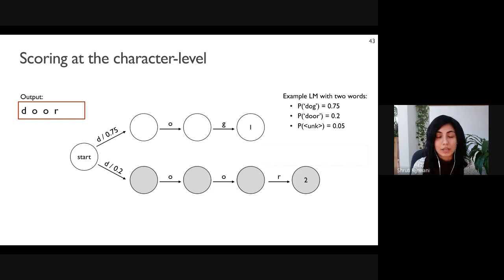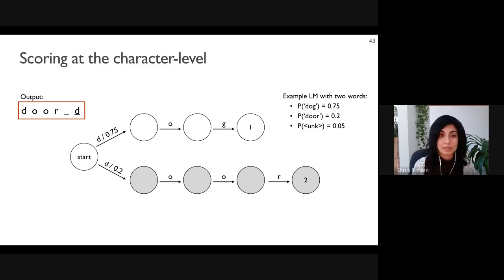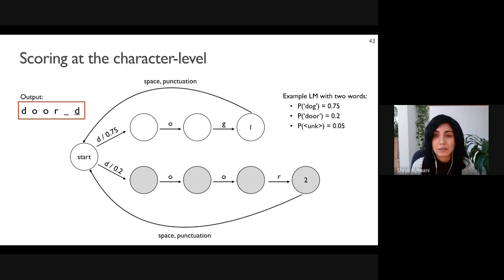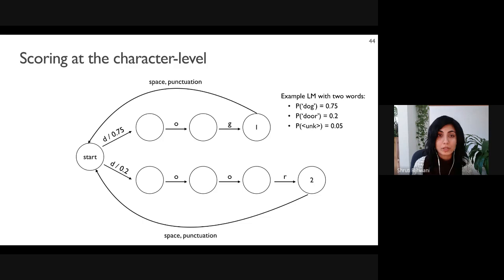We do the same for all other words in the count-based language model to form the full WFSA representation. Since the outputs in post-correction are lines or sentences containing more than one word, the WFSA in its basic form can only accept a single word. To handle this, we add a transition back to the start state from the end of each word that accepts word boundary symbols like spaces and punctuation, allowing the model to begin accepting characters from the next word.